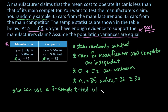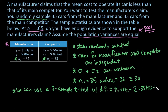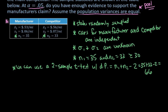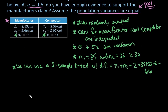Our degrees of freedom — we're going to use N1 plus N2 minus 2. So we plug in 35 plus 33 minus 2. That gives us 68 minus 2, which equals 66. So our degrees of freedom is 66, and I'm going to use the calculator to find the rest of the information.